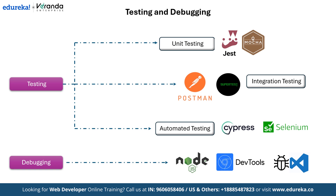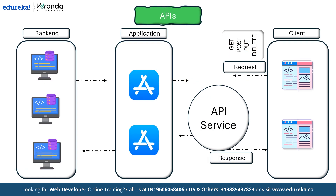Finally, let's move on to APIs, an essential aspect of backend development. In a typical API architecture, the process begins with the client where the user interacts with web or mobile applications. These applications send requests to the API service using HTTP methods such as GET, POST, PUT and DELETE. The API service acts as an intermediary, processing requests and forwarding them to the application layer, which communicates with the backend — servers that handle business logic and database operations. Once the backend processes the request, the response is sent back through the application layer to the API service and finally delivered to the client, completing the communication cycle. This architecture ensures smooth interaction between software components, making systems more efficient and scalable.